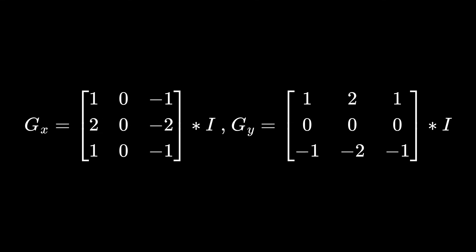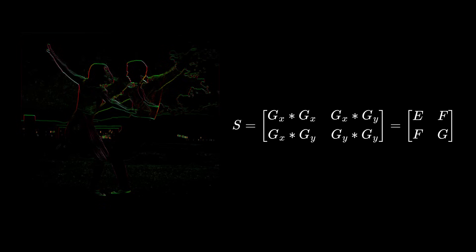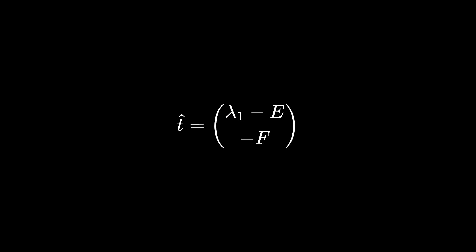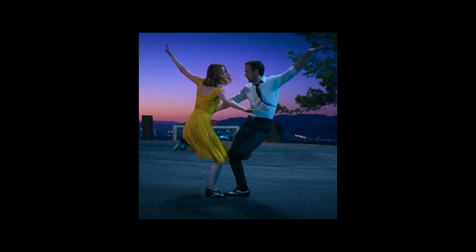As a quick recap, the edge tangent flow of the image is calculated by convolving the image with the Sobel operator, such that we approximate the partial derivatives of the image, which we then use to create a structure tensor. This is where our next parameter of the effect is introduced. We want to Gaussian blur the structure tensor, but depending on how much we blur it, we can get different styles. The standard deviation of the structure tensor blur will be referred to as sigma c. After blurring, we construct the eigenvector that points in the direction of least change, and we have a map of the edge tangent flow. We can then use this map when we calculate our two Gaussian blurs, but now, instead of Gaussian blurring the whole image, we only need to do a one-dimensional blur across the edges. The standard deviation of this Gaussian blur will be referred to as sigma e.